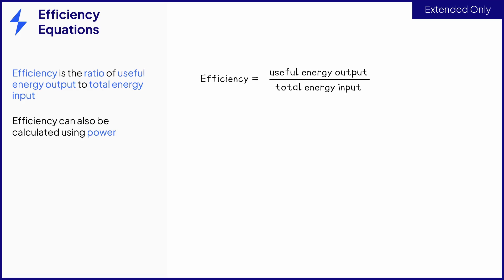Efficiency is just the ratio of the useful energy output to the total energy input. This equation can be used for calculations. You can also use power to calculate efficiency using this equation. These equations will give you a decimal answer between 0 and 1. If you need to convert them to percentages, you can just multiply the decimal by 100.